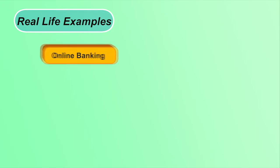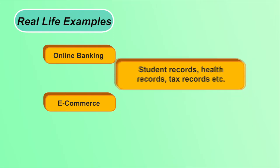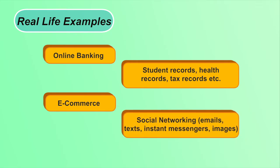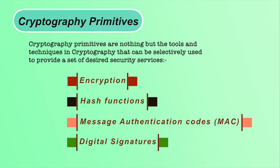Real-life examples of cryptography: In online banking, when you type your password, it is first encrypted and then sent to the server for authentication. In e-commerce, debit card information is saved in encrypted form. Student, health, and tax records are all stored encrypted. In social networking, WhatsApp messages are shared between sender and receiver in encrypted form so the attacker cannot read them. Cryptography primitives are tools and techniques that can be selectively used to provide a set of desired security services.